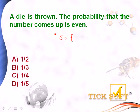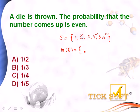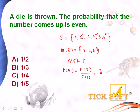When a die is thrown, you can get 1, 2, 3, 4, 5, and 6. The even numbers are 2, 4, and 6. So the probability of getting an even number: n(E) is equal to 3. P(E) equals n(E) by n(S), that is 3 by 6, which equals 1 by 2. So option a, 1 by 2, is the right answer.